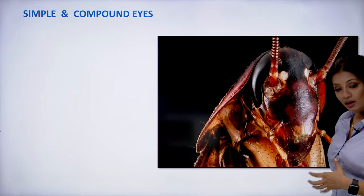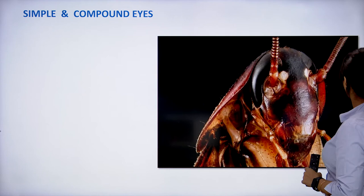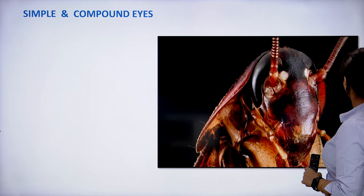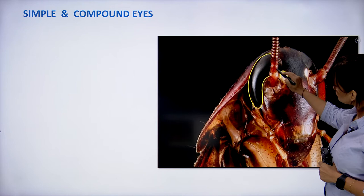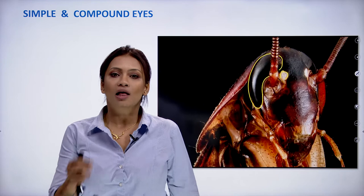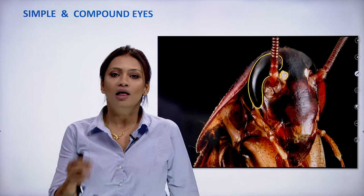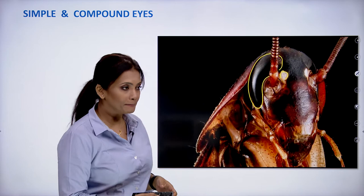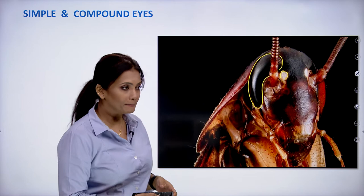Looking at a close-up diagram of the cockroach head, the compound eyes are visible on the lateral sides of the head. The ocelli will be discussed later. The compound eye is positioned on the lateral sides so that the cockroach can have a broader field of vision.